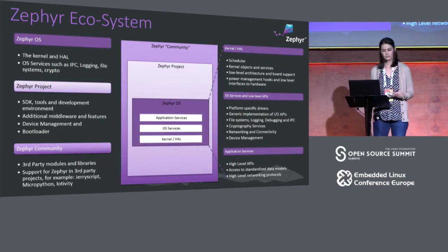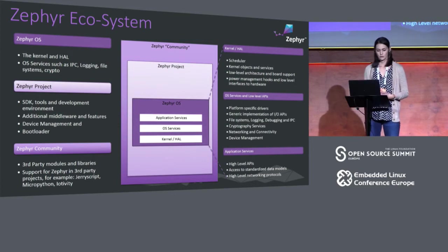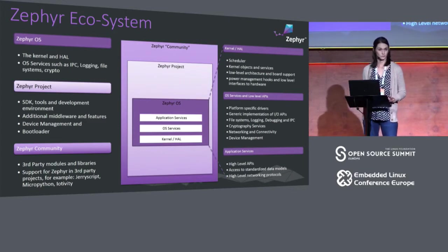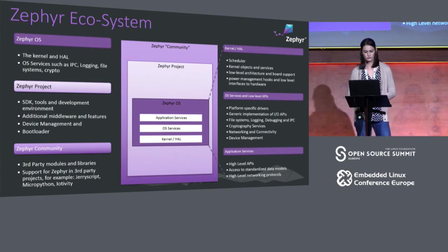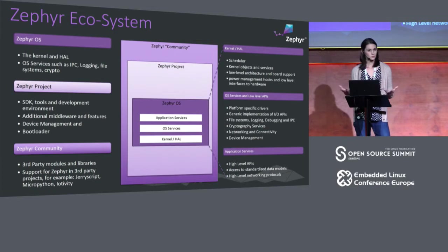The Zephyr ecosystem can be looked at in three different levels. Starting with the Zephyr OS itself — the core scheduling kernel, the threading model, and driver models for the lowest level of hardware enablement. That includes things like platform-specific drivers, IO APIs, file systems, networking and connectivity — TCP/IP, Bluetooth, things like that. So it's not just the vendor part, but it's also building up middleware stacks that we all need and have in common.